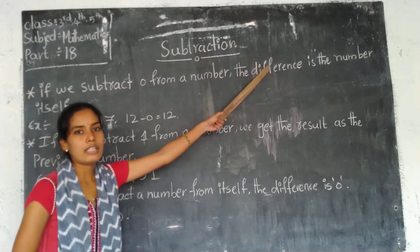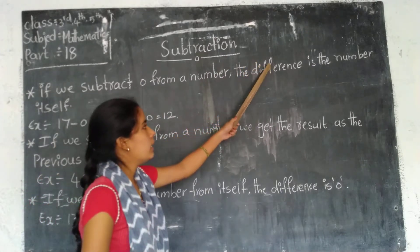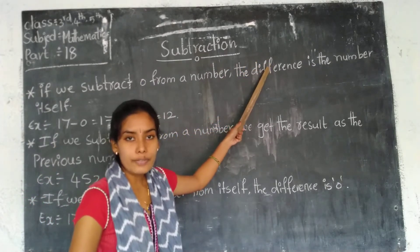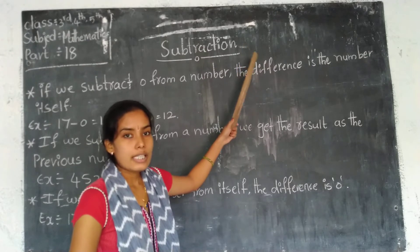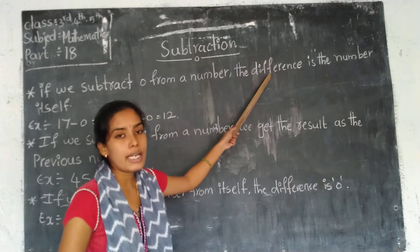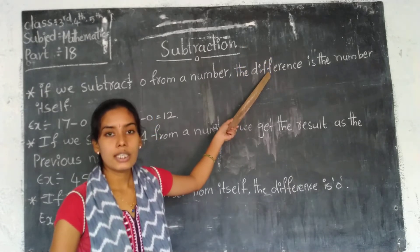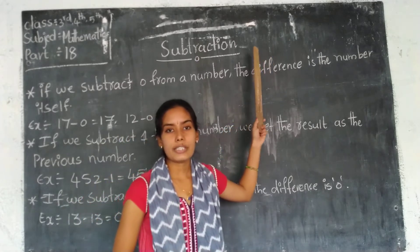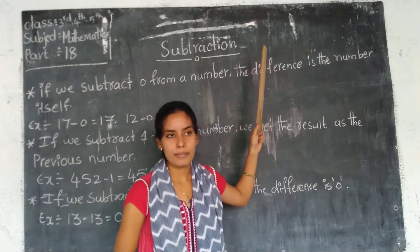What is the meaning of 'difference'? The result of subtraction is called the difference. What about addition? The result of addition is called the sum.